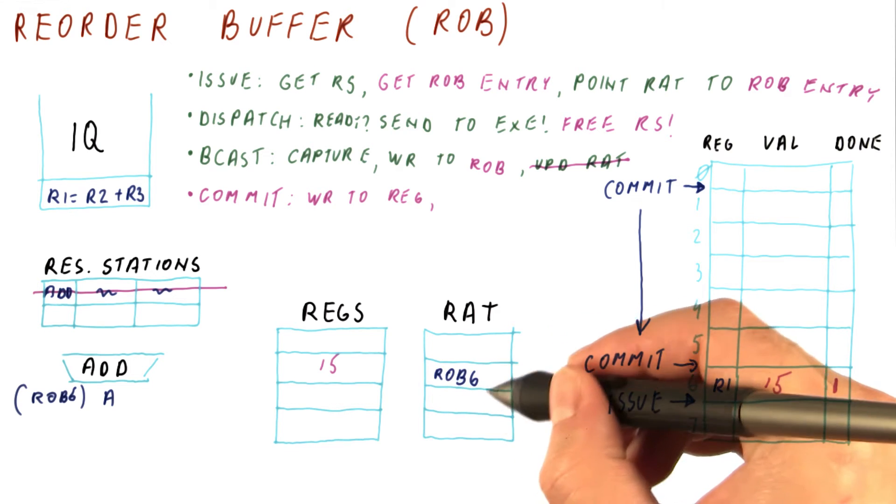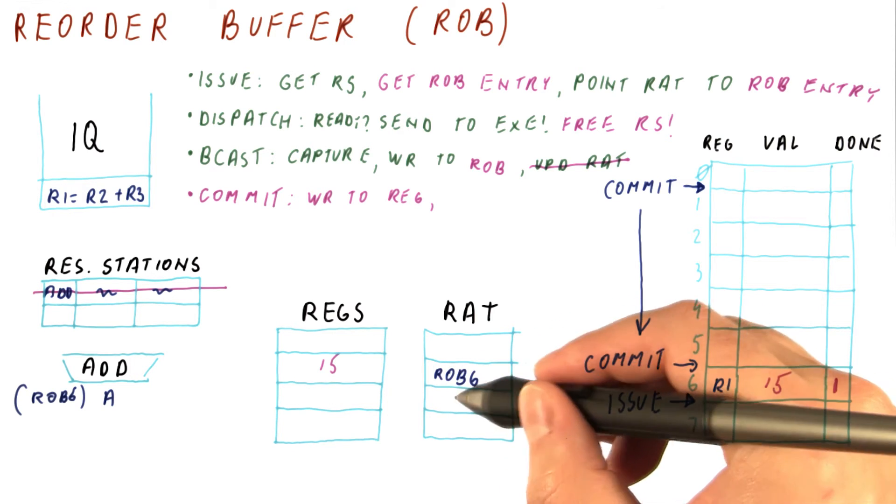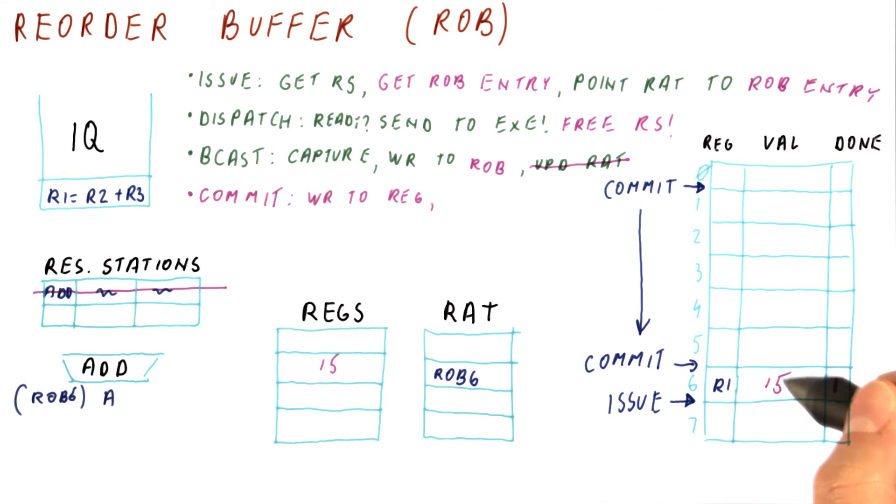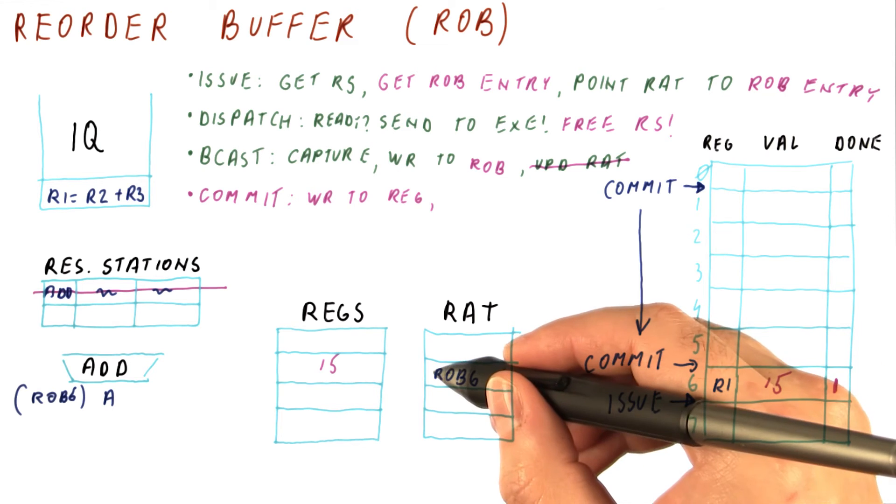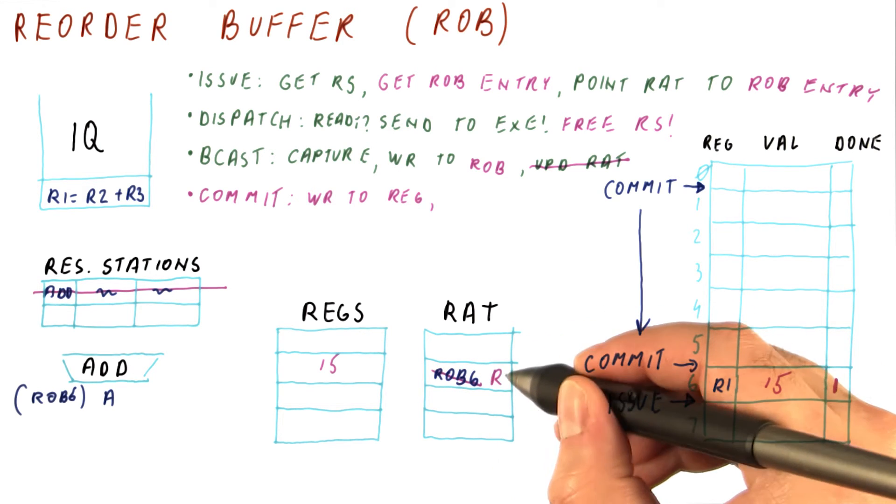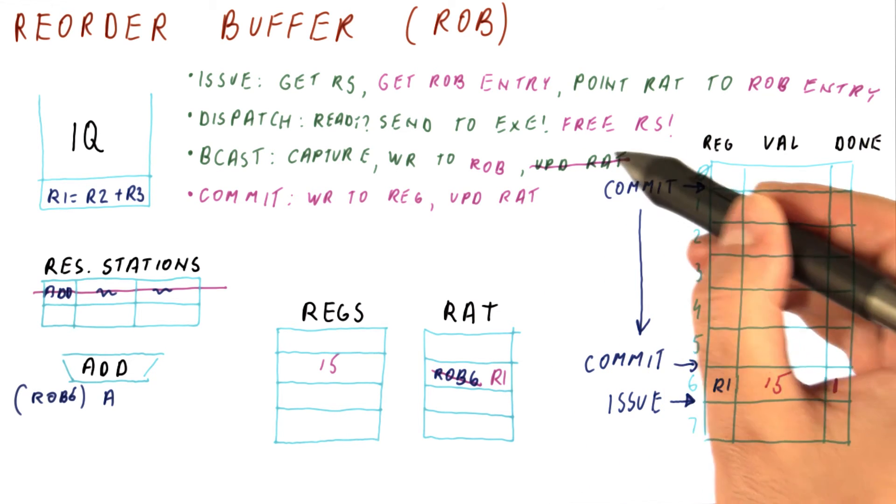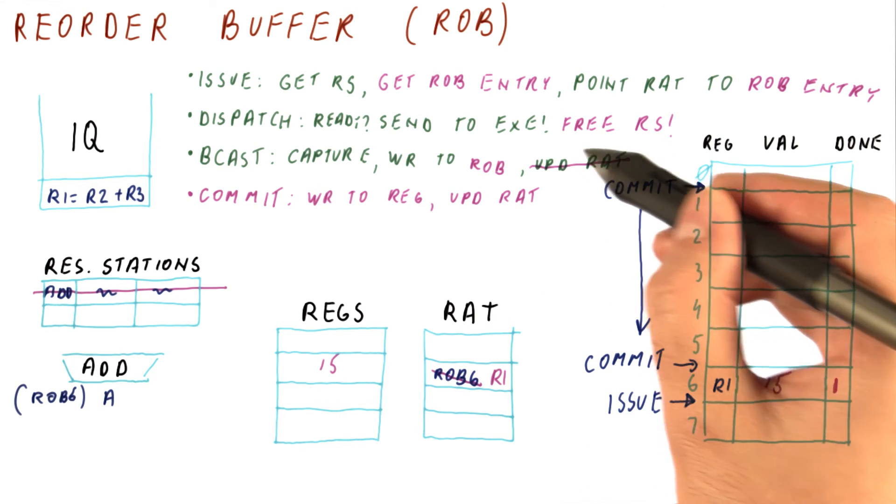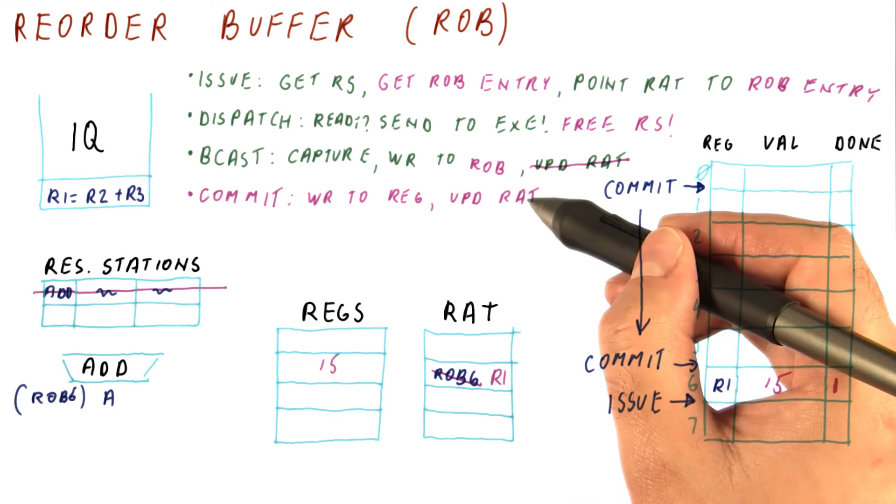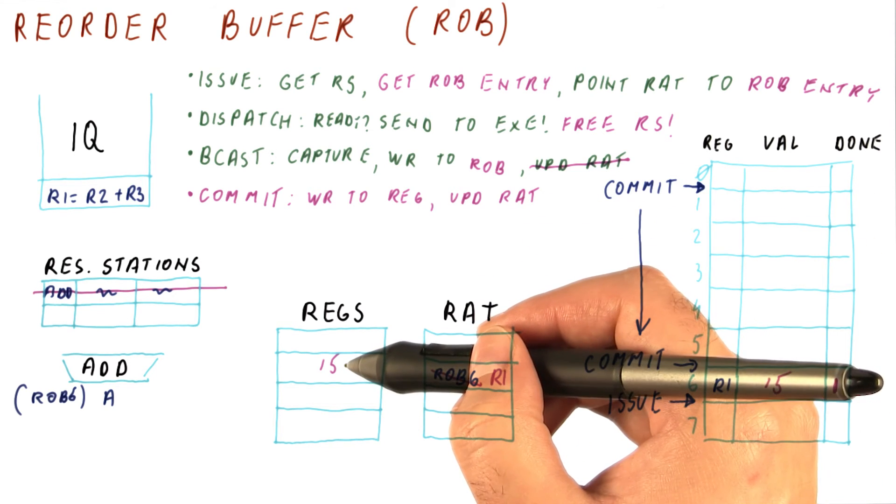And also, we need to update the RAT, because it's pointing to the entry rob6. That entry will be freed after we commit this instruction. So instead of pointing to rob6, now we can point to r1. So really, the updating of the RAT for writing to the register has moved from the broadcast time to the commit time, because that's when we are actually updating the register.